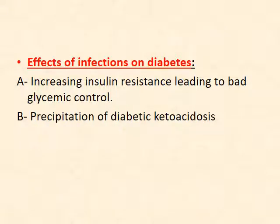Regarding the effects of infection on diabetes: infection is a stressful condition that releases cortisol, leading to increased insulin resistance, making it difficult to control blood glucose. It can be precipitative to diabetic ketoacidosis, and in patients susceptible to diabetes, infection can precipitate the occurrence of the disease.